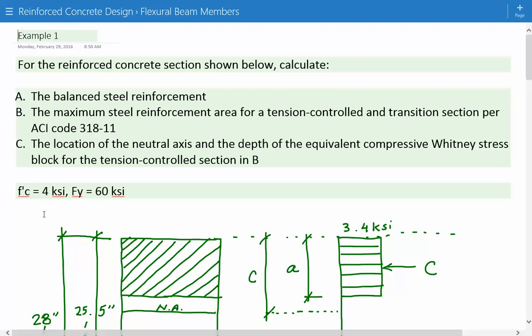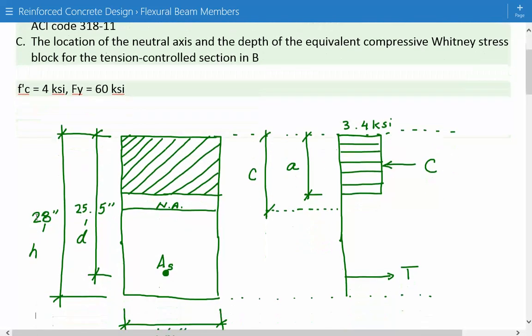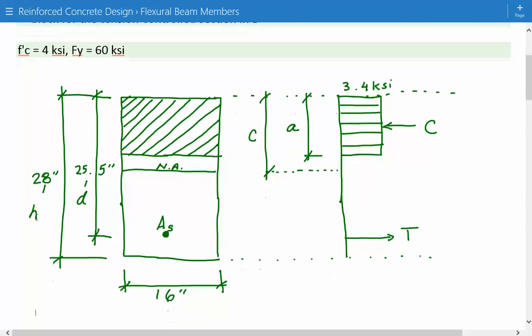The compressive strength of the concrete is 4 KSI and the yield strength is 60 KSI. Here's our cross-sectional area of the reinforced concrete beam. H is 28 inches from the top of the beam to the bottom. D is the distance from the extreme compression fiber to the extreme tensile tension steel, which is 25.5 inches.